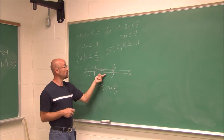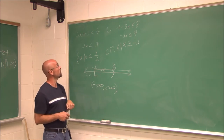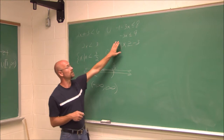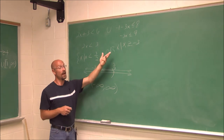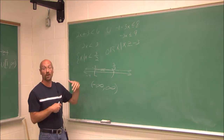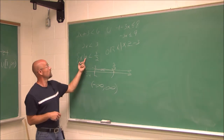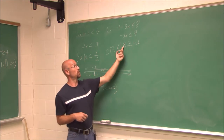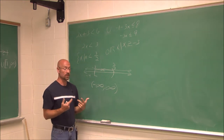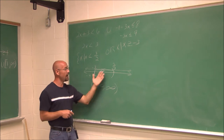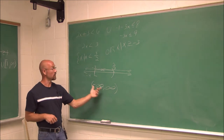If I choose a value in between, like 0: 0 is less than 3/2 — true — and 0 is greater than negative 3 — also true. It solves both, but we just need it to solve one or the other. If I choose 2, which is greater than 3/2: is 2 less than 3/2? No. But 2 is definitely greater than negative 3, so it solves one or the other. If I choose something in any area, it solves one or the other, so it is all real numbers — the entire number line.